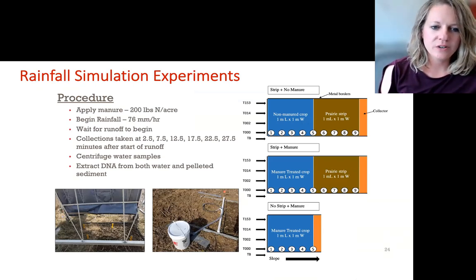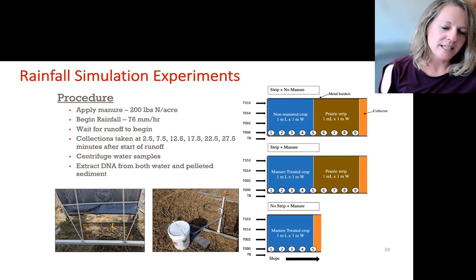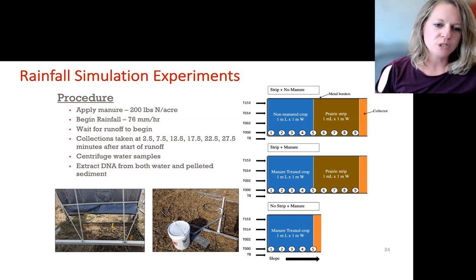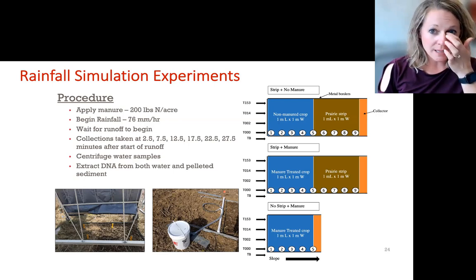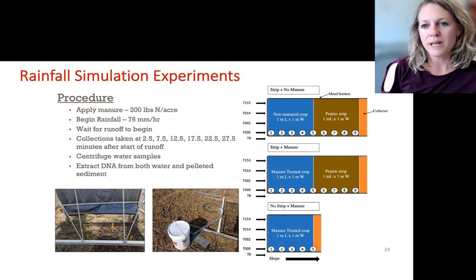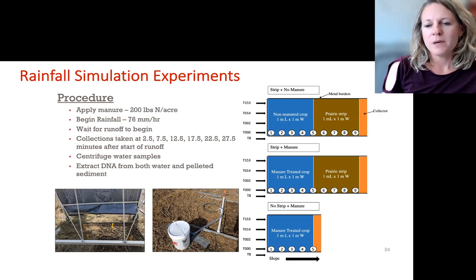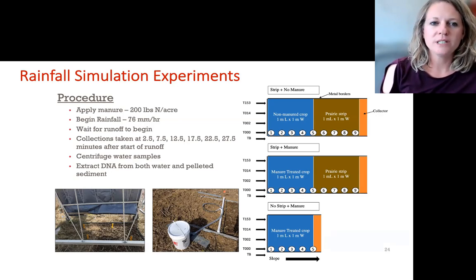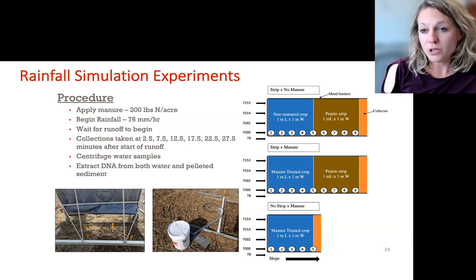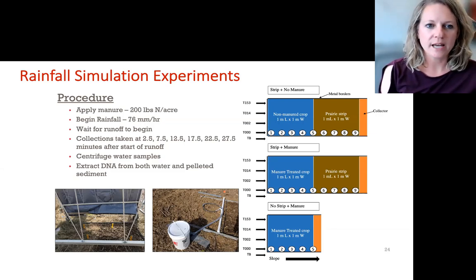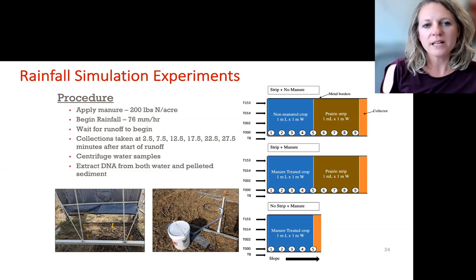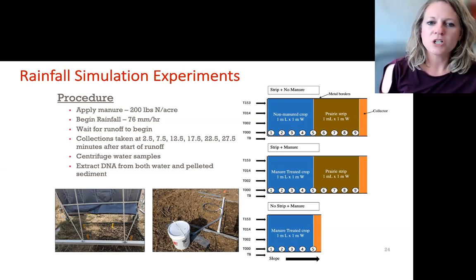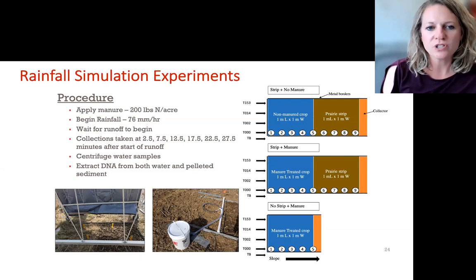The two pictures on the bottom show the inside of the rainfall simulator — tarps were used to prevent wind from interfering. The schematic on the right shows the layout where manure was applied upstream, then there was a prairie strip, and we collected runoff at the outlet. The three different treatments were: a prairie strip with no manure, a prairie strip with manure, and a manure-only cropland area. We applied rainfall at about three inches per hour and collected runoff at about five-minute increments after runoff started.